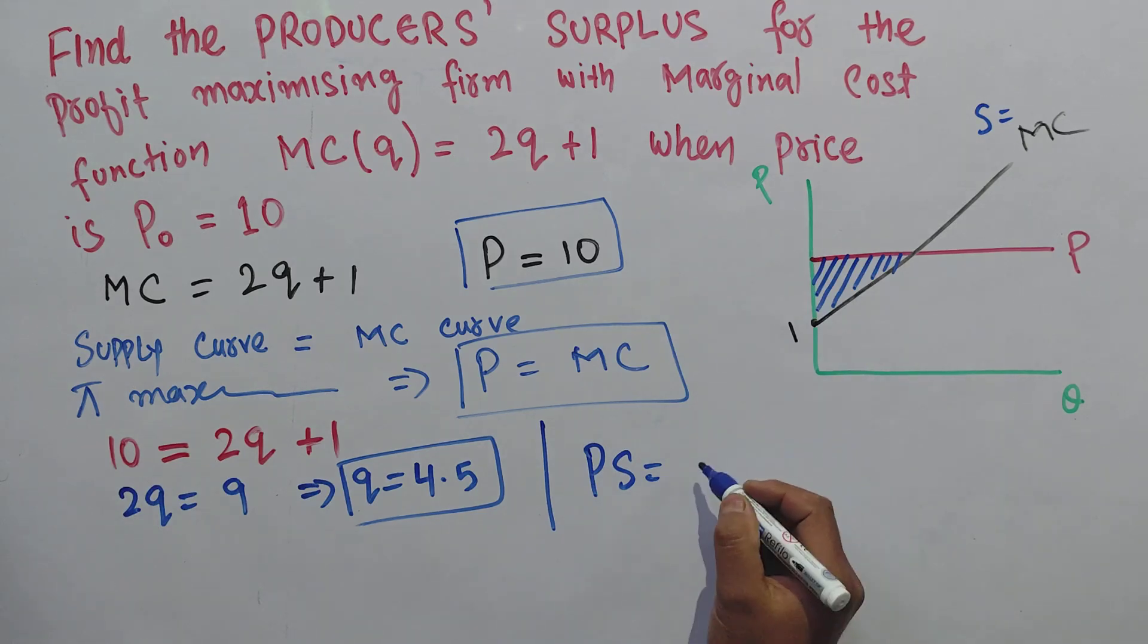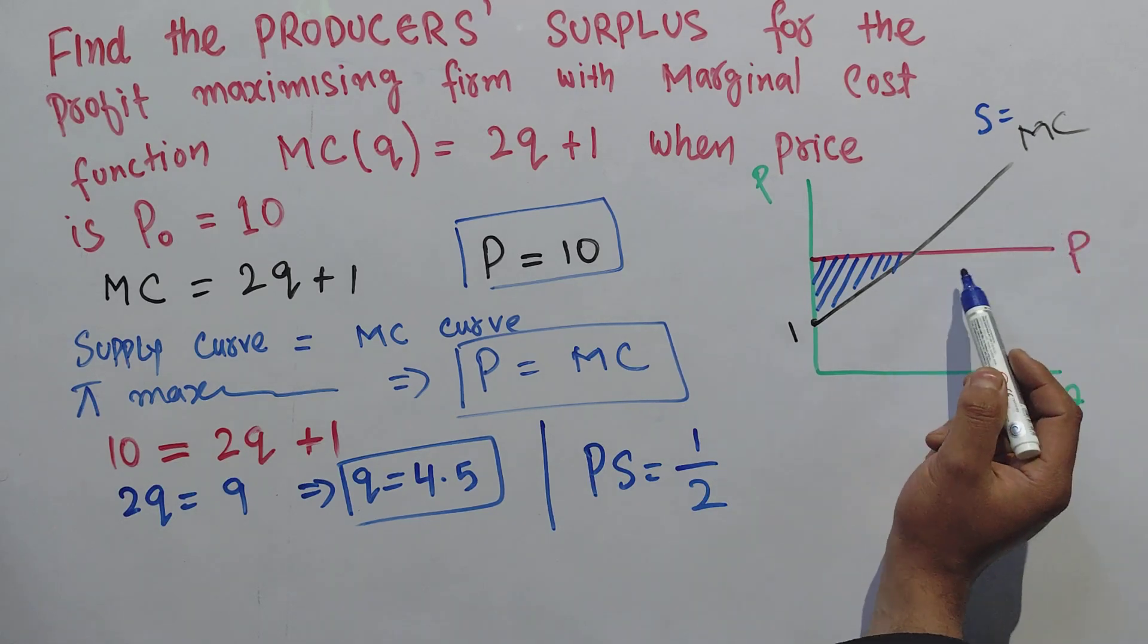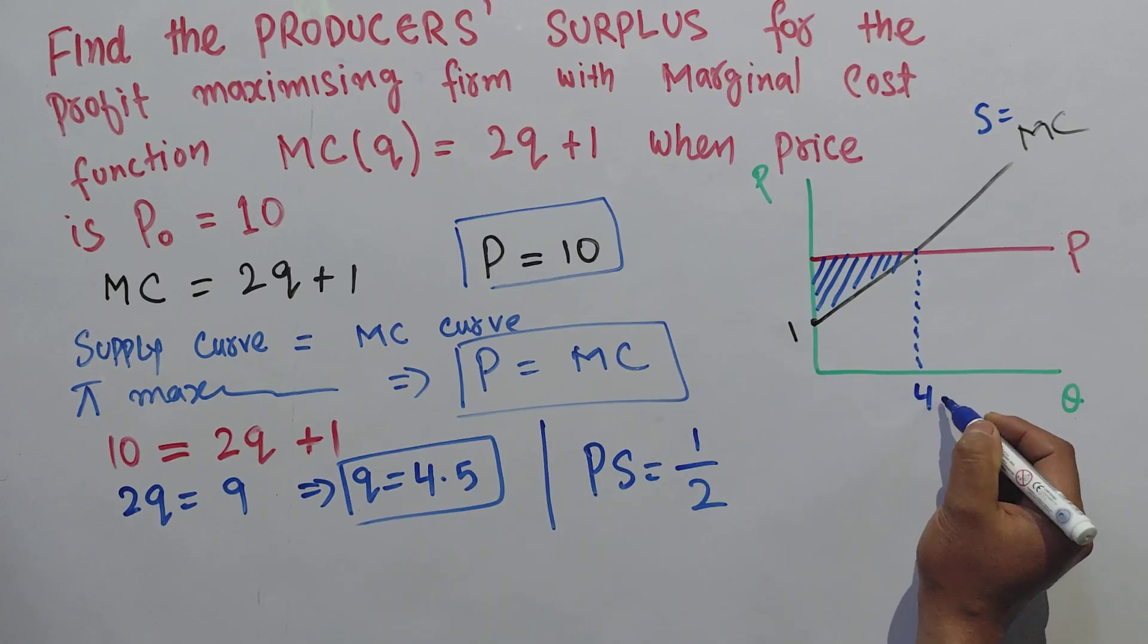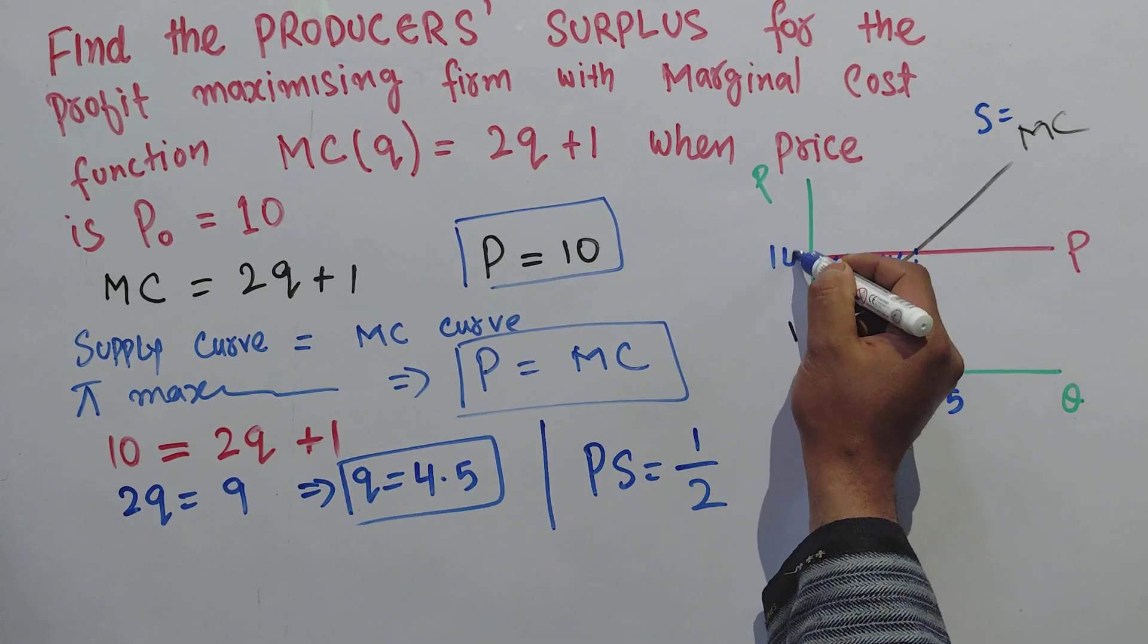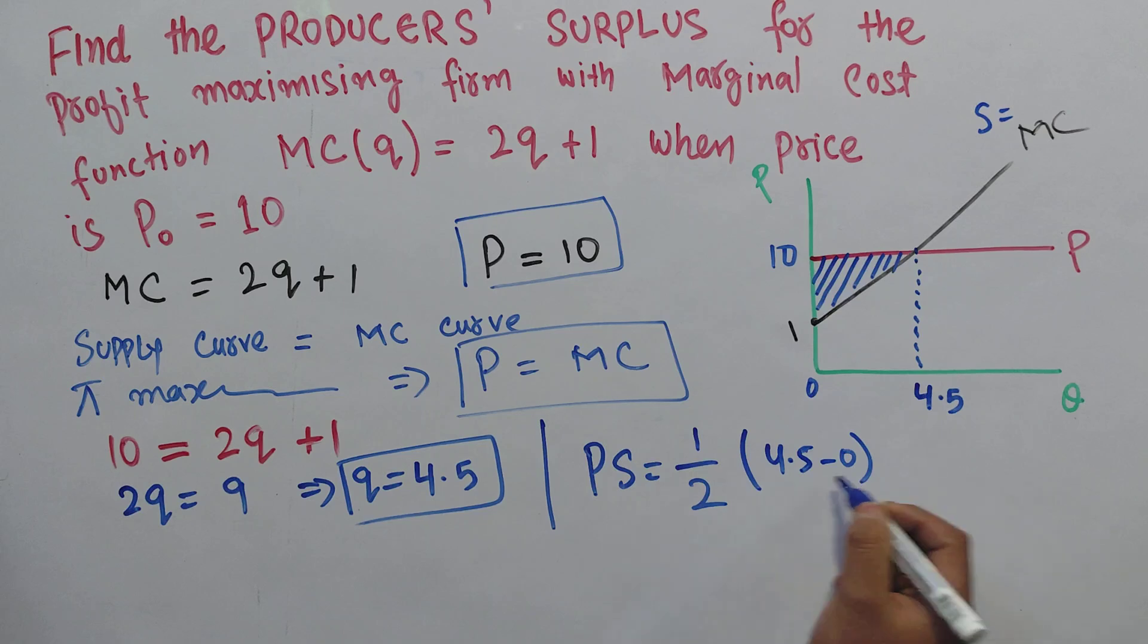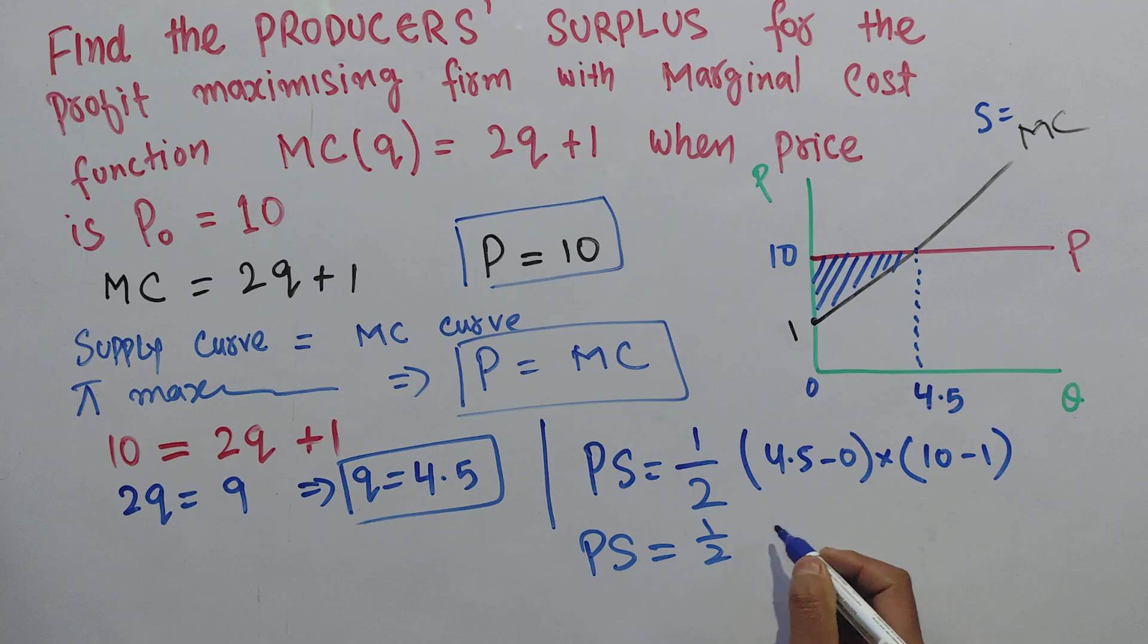The area of a triangle is one half of base times height. When P equals MC, they equate at 4.5, and market price is 10. The base is 4.5 minus 0, which is 4.5. The height is 10 minus 1, which is 9. So producer surplus equals one half of 4.5 times 9.